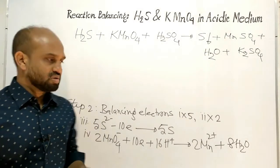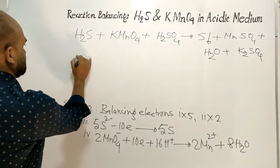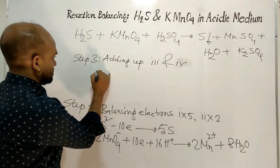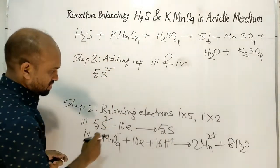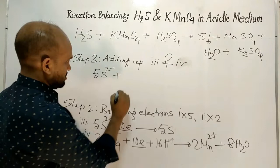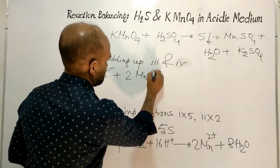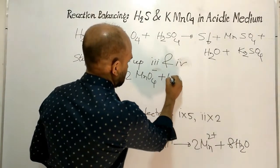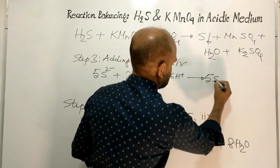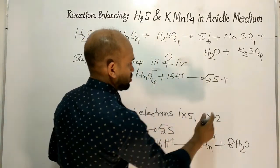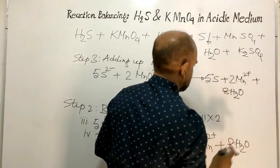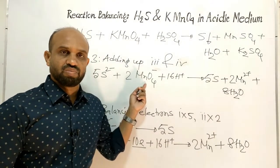Step three: add equation three and equation four. On the left side: five sulfide ions plus two permanganate ions plus sixteen protons. The ten electrons cancel out. On the right side: five sulfur atoms plus two manganese ions plus eight molecules of water. This is the ionic equation of the redox reaction.